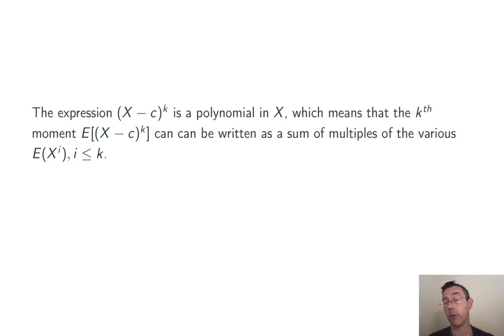To summarize this, we can always write the expected value of (x minus c) to the k, the kth moment, as a sum of multiples of the various expected values of x to the i, where i is 1, 2, 3 and so on.